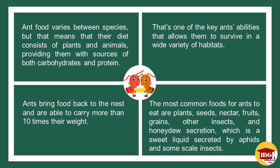The most common foods for ants to eat are plants, seeds, nectar, fruits, grains, other insects, and honeydew secretion, which is a sweet liquid secreted by aphids and some scale insects.